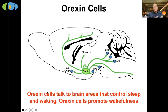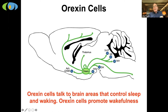Scientists then wanted to find out where orexin cells project in the brain. Looking at a side view of a mouse brain, these cells restricted in a tiny layer seem to project all over the brain — up into the front, middle, and back of the brain, and all the way down into the spinal cord. Importantly, these orexin cells seem to communicate with areas of the brain that are really important in controlling sleep and wakefulness.